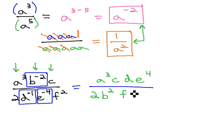The f squared does not have a negative exponent on it, so it stays in the denominator, and we end up with our simplified final result of a cubed c d e to the 4th over 2b squared f squared. When simplifying with exponents, we like our final answer to only have positive exponents, which we get by moving them to the opposite location.